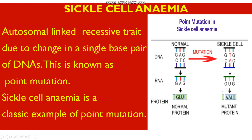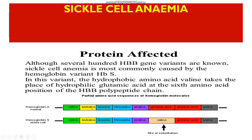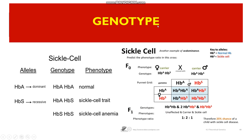The defect in sickle cell anemia occurs in the beta chain of hemoglobin. The sixth amino acid of the beta globin chain, which is normally glutamic acid, is replaced by valine. Here you can see the beta globin chain of the hemoglobin molecule: in normal hemoglobin, the sixth amino acid is glutamic acid, whereas in sickle cell anemic individuals it is valine.